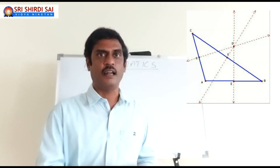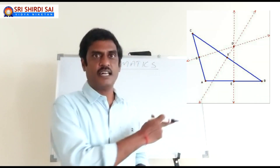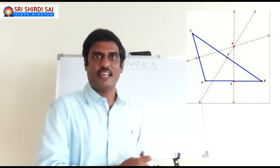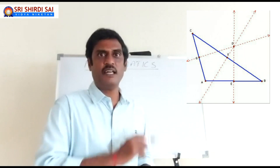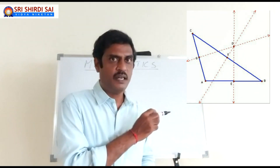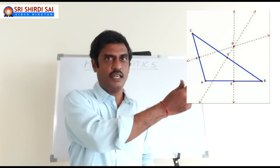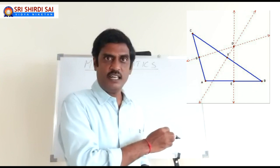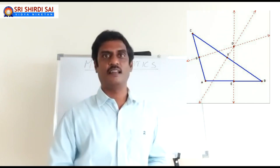Let's see a different type of triangle. It is an obtuse angle triangle — triangle ABC — and the obtuse angle is at A. There are 3 perpendicular bisectors drawn, and all 3 perpendicular bisectors are meeting outside the triangle, at point D. So, for an obtuse angle triangle, the circumcenter lies outside the triangle.